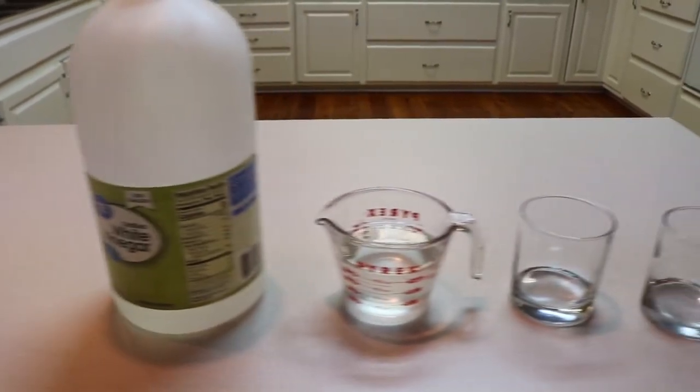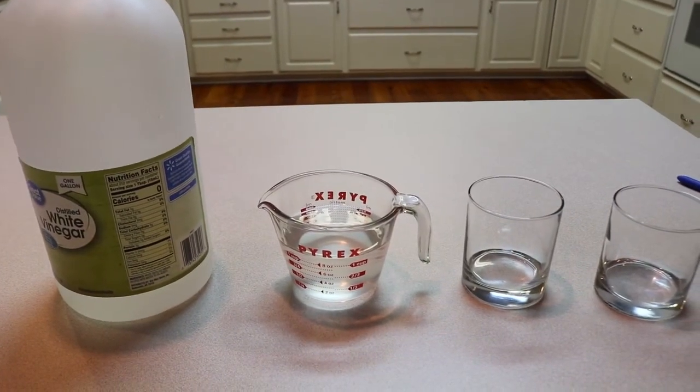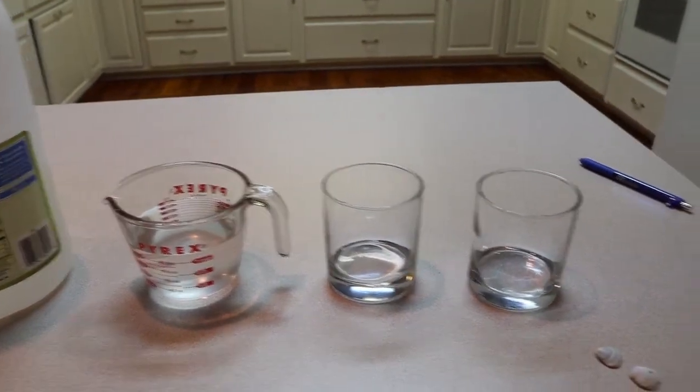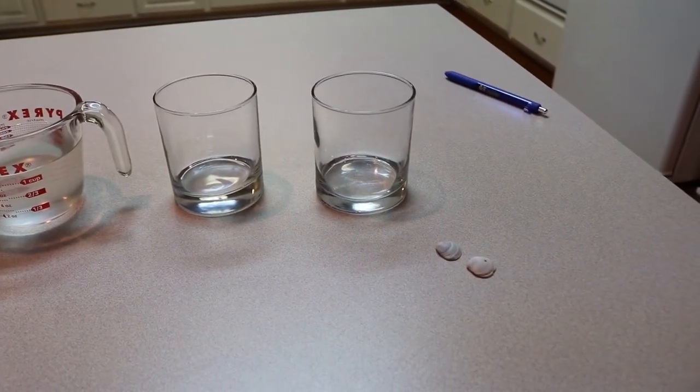Here are the materials that you're going to need. You'll need white vinegar, some simulated ocean water, I've used a teaspoon and a half of salt per cup of water here, a couple of glasses, and lastly you'll need a couple of seashells.